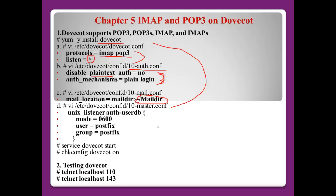Next is 10-master.conf. Here, around five lines - we have to configure the exact permission mode, user name, and group name to support the IMAP server. After that, we need to start Dovecot: service dovecot start or restart. If we want to register to the run level, we can use chkconfig.